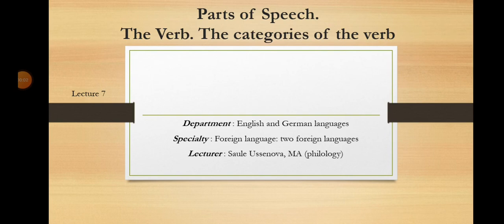Welcome to the lectures on language theory. This is lecture number seven within the course and the second lecture in the second module of theoretical grammar. The lecture is delivered specially for the students of the Department of English and German languages. The theme of this lecture is parts of speech, the verb, and the categories of the verb.